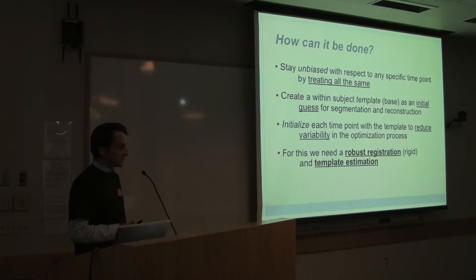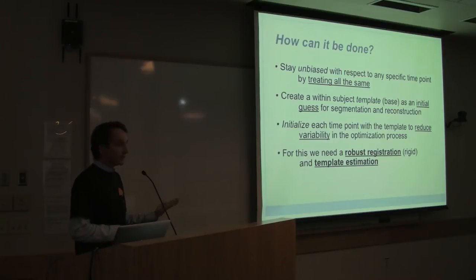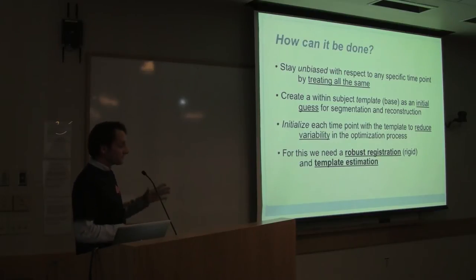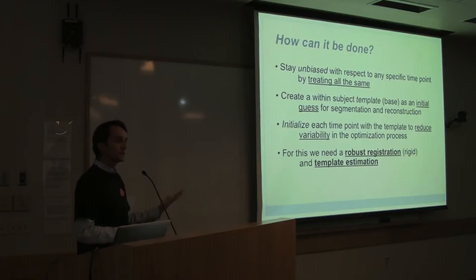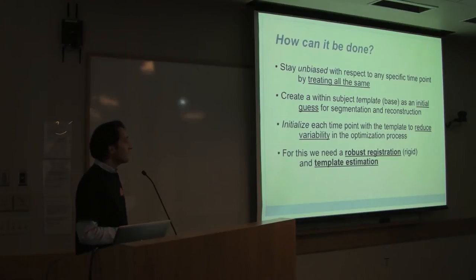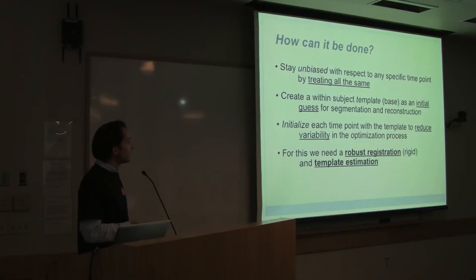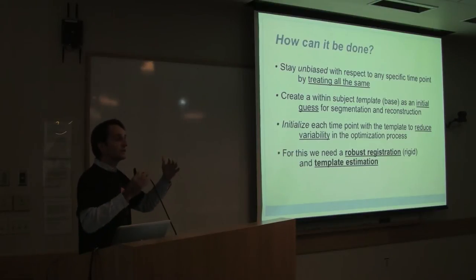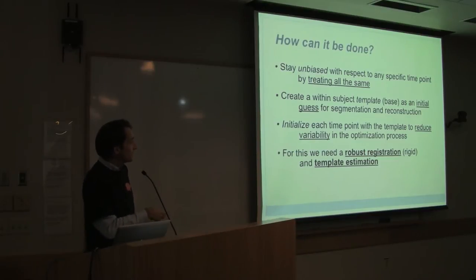So how can we do this? One key idea is that we treat all time points the same — this avoids bias. Another is that we create a within-subject template by averaging all time points, giving us a within-subject template image representing the average anatomy of that specific subject. We then use this average to initialize all the individual time points. We compute surfaces and segmentations on this average, then transfer that information to initialize processing at each individual time point.